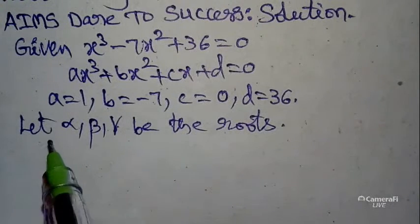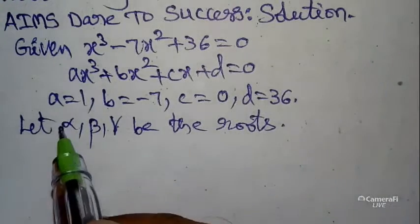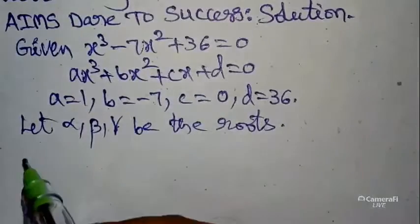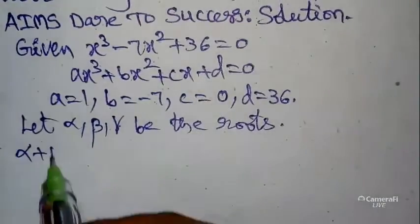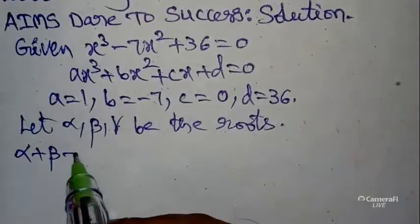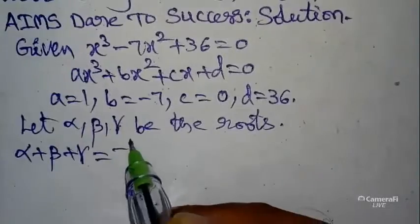Here we don't use all 3 formulas; we use only 2 formulas. First formula: sum of the roots, alpha + beta + gamma = -b/a = -(-7)/1 = 7.